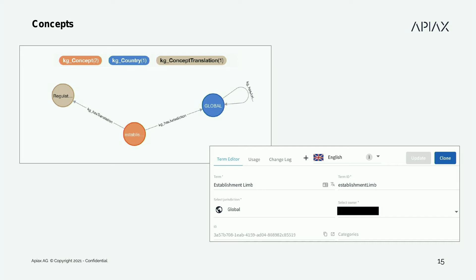Here on the right-hand side you can see the user interface, how the user enters information for the concept establishment limb. The term ID is derived from the term in this case, though this doesn't always need to be the case. You can also see an additional ID at the bottom — this is the ID that is truly unique. The term ID need not be unique; we'll see examples of how we use this. The term ID specifies a specific concept, but we can have several entries in our knowledge graph under the same term ID.